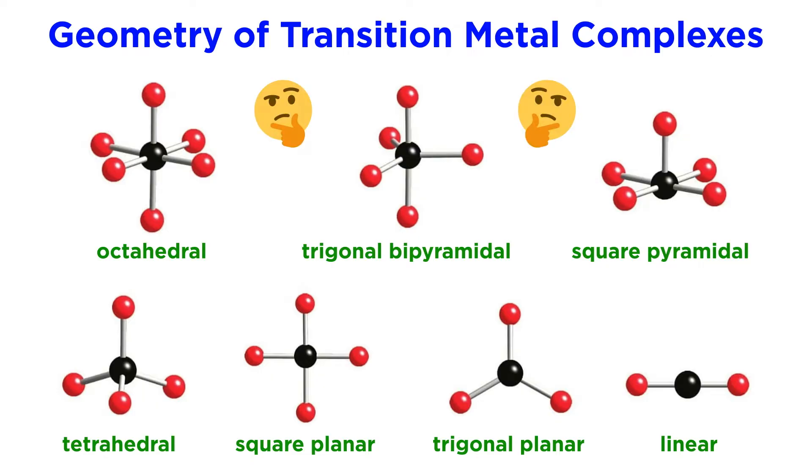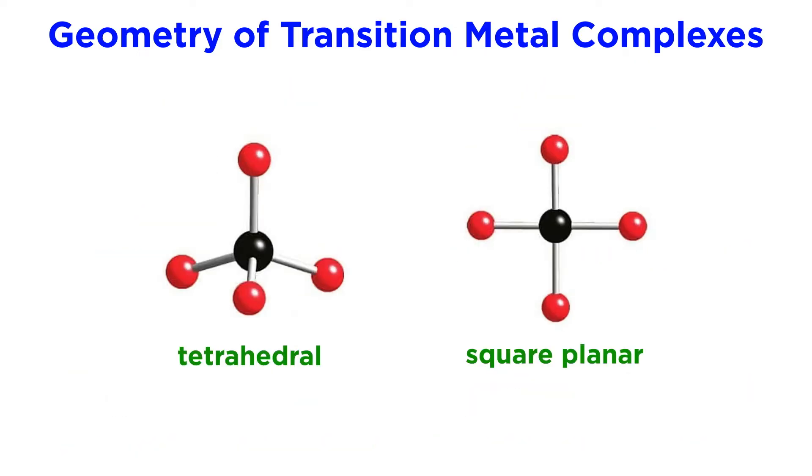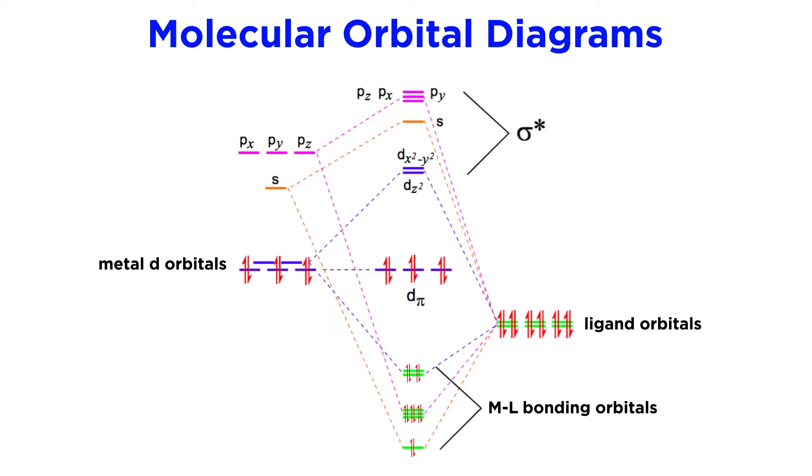It will not always be obvious which geometry a complex will take on, as this may depend on the identity of the metal atom as well as the ligands. For example, with four ligands, will a complex be tetrahedral or square planar? Answering this question will require a tutorial all to itself, but one thing that we should look at briefly right now is a molecular orbital diagram for transition metal complexes.